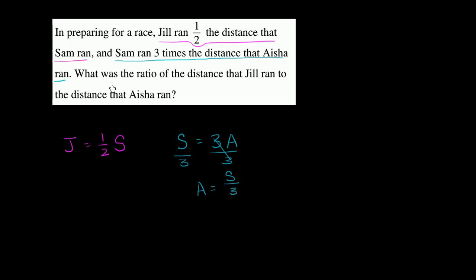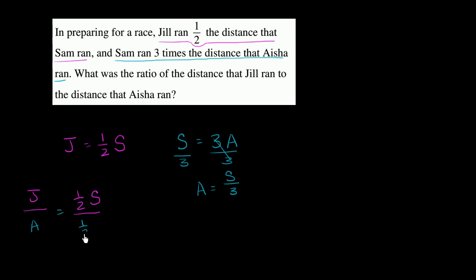So if we want to find the ratio of the distance Jill ran to the distance Aisha ran — the ratio J over A — this is going to be equal to one-half S, which is what J equals, over one-third S, which is what A equals. So it's equal to one-half divided by one-third, and the S's cancel out.